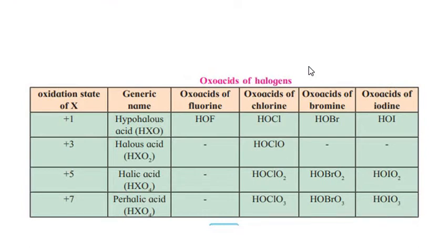The oxoacids formed by halogens involve oxidation states of +1, +3, +5, and +7. The generic names are hypochlorous acid, chlorous acid, chloric acid, and perchloric acid corresponding to those oxidation states.